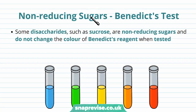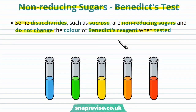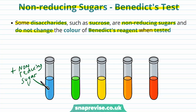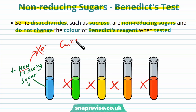Other types of carbohydrates are called non-reducing sugars, and they're also tested for with the Benedict's test but with a slightly different procedure. Some disaccharides, such as sucrose, are non-reducing sugars — they don't change the colour of Benedict's reagent when tested, because they are not able to give electrons to other molecules and therefore cannot turn copper 2 plus into copper 1 plus to form the red precipitate.